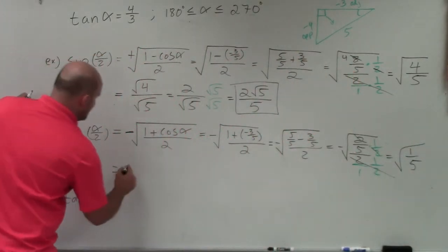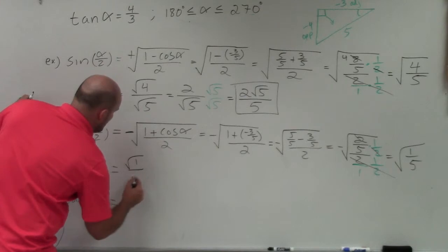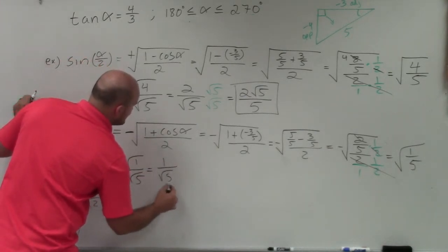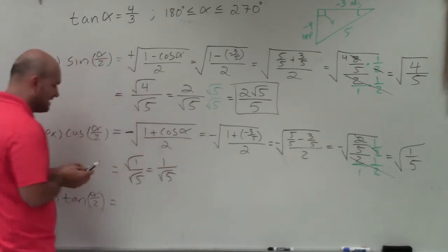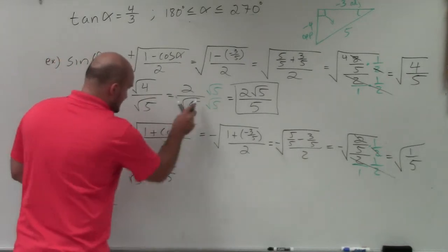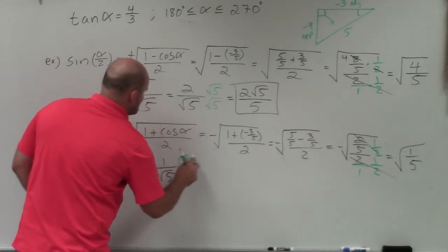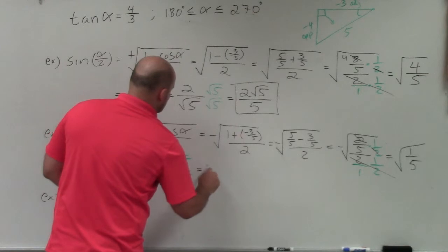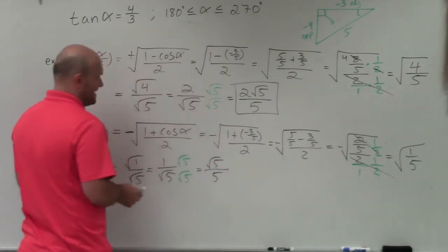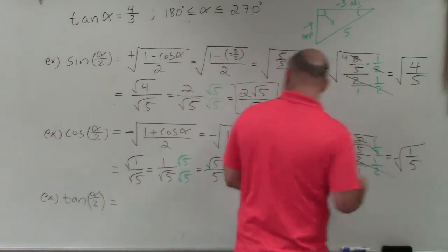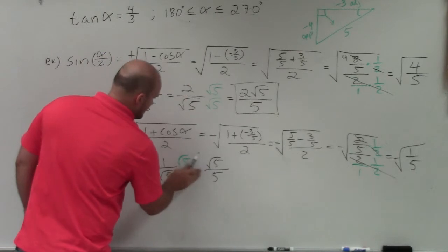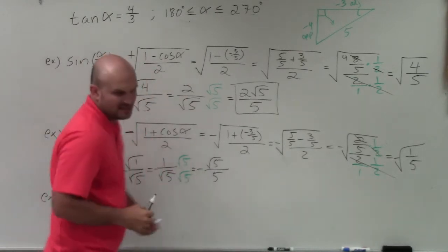Breaking up the square root: square root of 1 over square root of 5, which is 1 over square root of 5. Rationalizing the denominator by multiplying by square root of 5 over square root of 5 gives square root of 5 over 5. And since cosine is negative in the second quadrant, the answer is negative square root of 5 over 5.